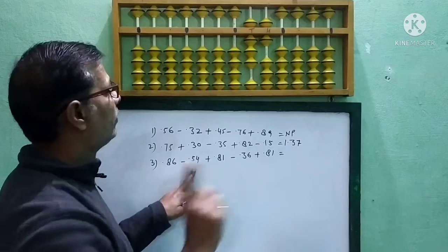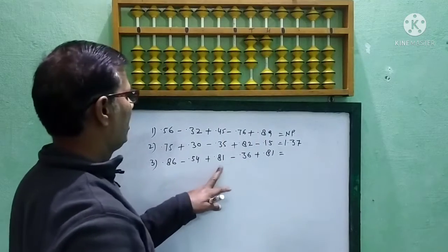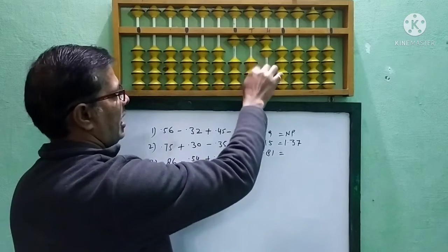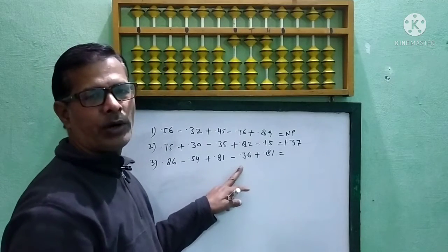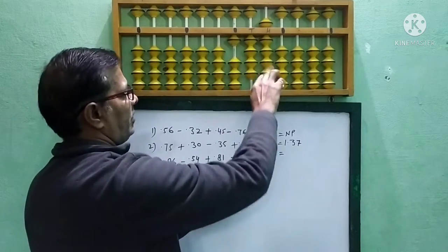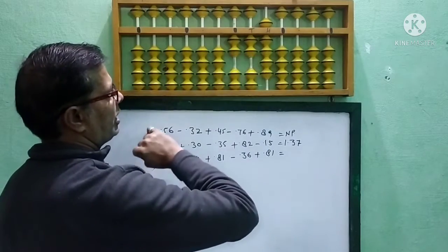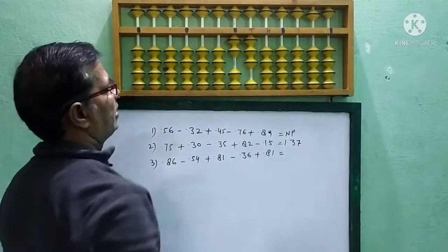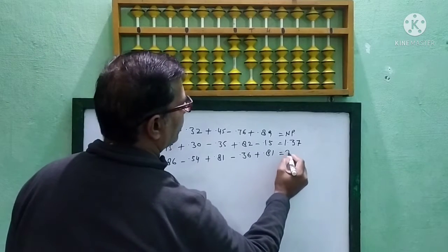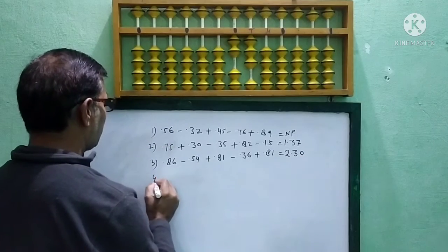Minus 0.54, minus 5, minus 4, minus 5 plus 1. Plus 0.81, 8 plus 10 minus 2, 8 and then 1 direct. Minus 0.36, 0.3 and direct 6. Plus 0.81, 8 means plus 10 minus 2, 8 and then 1 plus 10 minus 9. So your answer is here: 2.30.